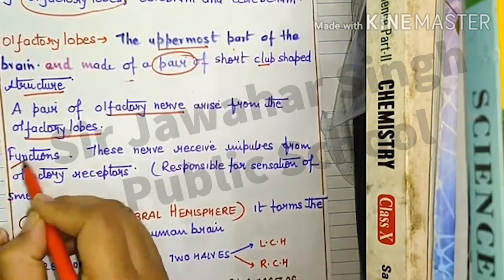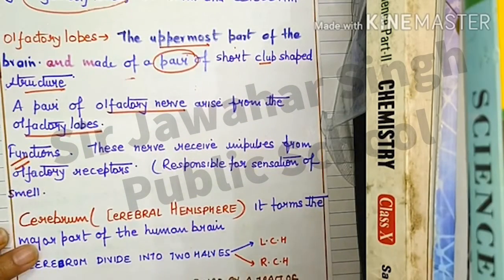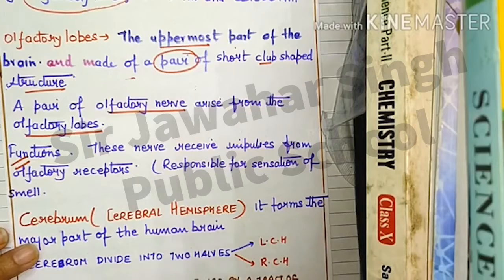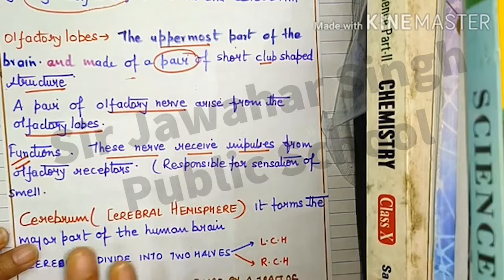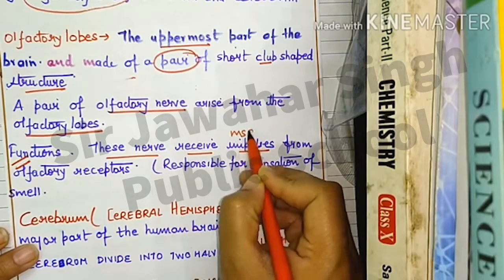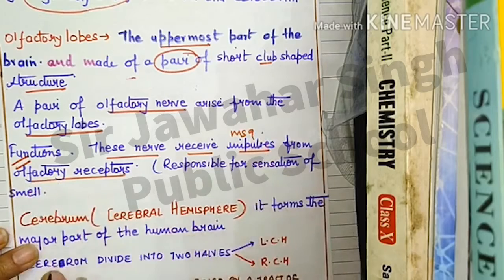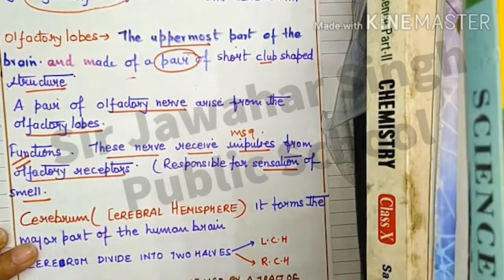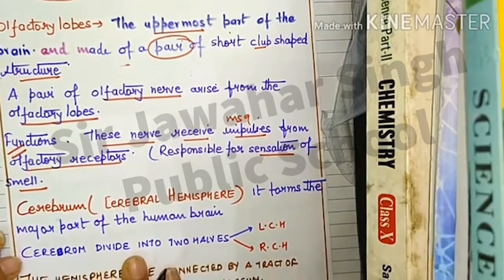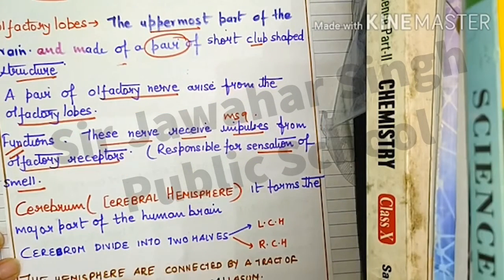The main function of the olfactory lobes, which are present in the forebrain in pairs at the uppermost part of the brain, is to receive impulses for the sensation of smelling, as they are present in the nose. We will talk about the cerebrum in the next video.